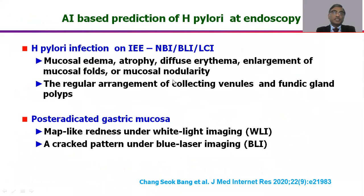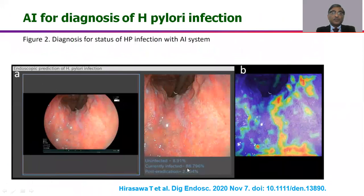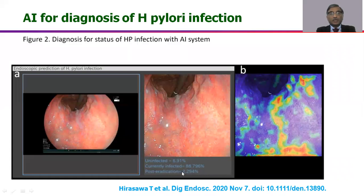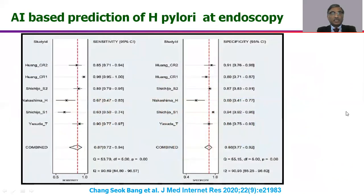AI-based softwares have also been used for detection of H. pylori during endoscopy. Different patterns are described for active H. pylori infection and post-eradication gastric changes. The software interprets the endoscopic image and states — for example — a probability of 88.7% for current active infection versus 2.2% for post-eradication, virtually confirming active H. pylori infection. A meta-analysis of six studies shows pretty good sensitivity and specificity for these softwares.